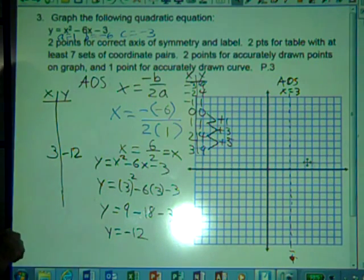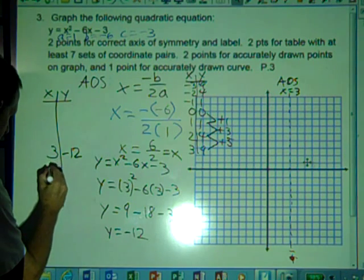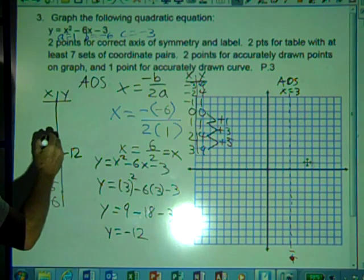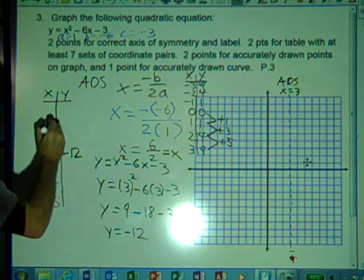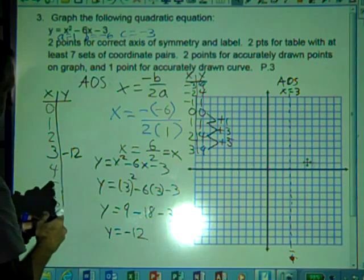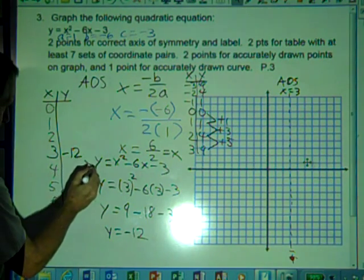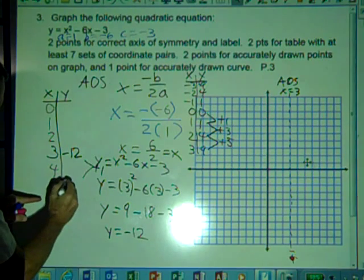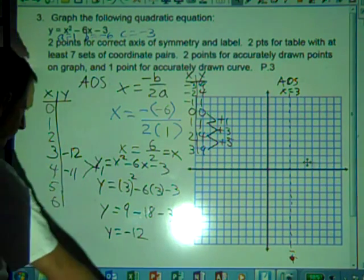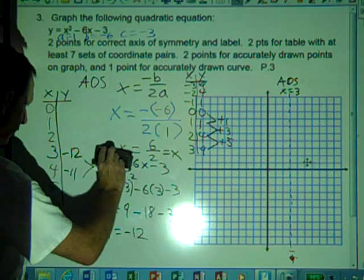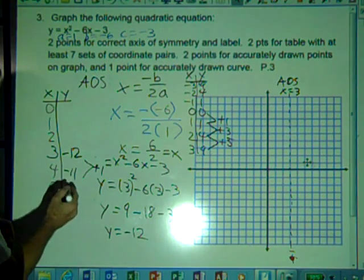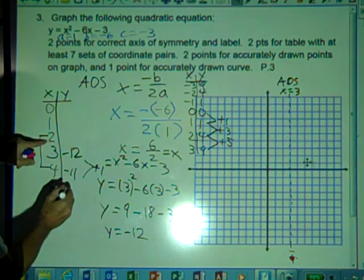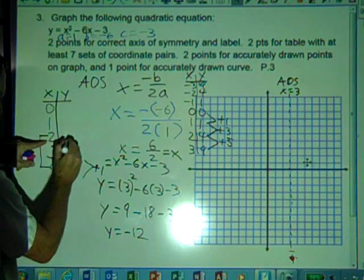So now we're going to go ahead and take inputs of 4, 5, and 6 to the right of the vertex, inputs of 2, 1, and 0 to the left of the vertex. And because of the step pattern, if we take plus 1 here, negative 12 plus 1 is going to be negative 11. So that will be the first step. And we know because of symmetry, if we go to the reflected side for an input of 2, we also get an output of negative 11.